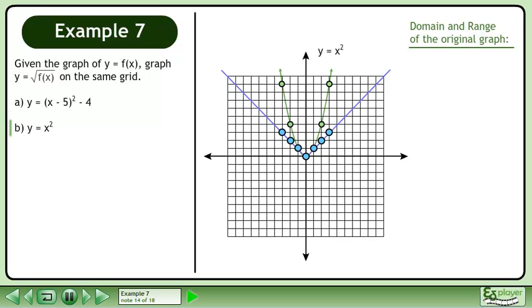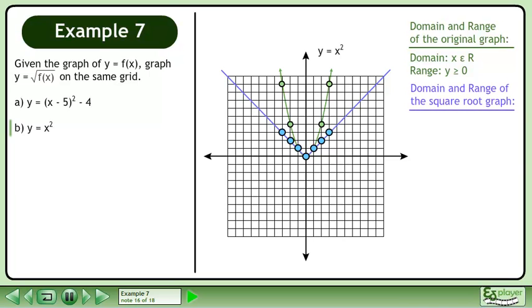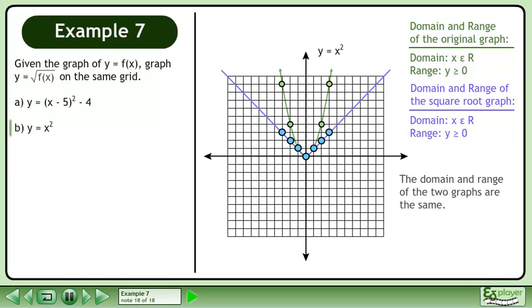Now we'll state the domain and range of the original graph: x belongs to the set of real numbers and the range is y is greater than or equal to 0. Now we'll state the domain and range of the square root graph: x belongs to the set of real numbers and the range is y is greater than or equal to 0. The domain and range of the two graphs are the same.